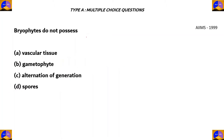Next question. Bryophytes do not possess: A. Vascular tissue, B. Gametophyte, C. Alternation of generation, and D. Spores. Let's look at each option. Bryophytes mainly reproduce through spores, so option D is incorrect.